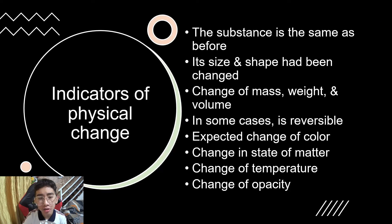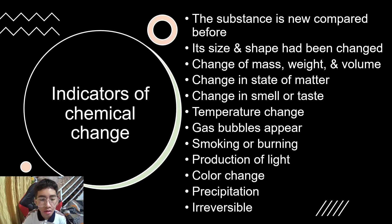The indicators of physical change: The substance is the same as before. Its size and shape had been changed. Changes of mass, weight, and volume. In some cases, is reversible. Expected change of color, change in state of matter, change of temperature, and change of opacity.